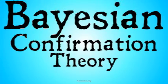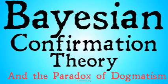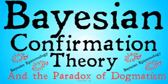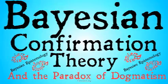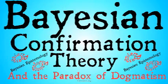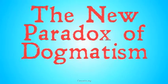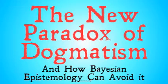Welcome back to Carniades.org. Today we're going to be continuing with our series on Bayesian Confirmation Theory and the Paradox of Dogmatism as part of our larger series on Bayesian Epistemology. This is going to be our last video in Bayesian Confirmation Theory, where we look at a very specific version of the Paradox of Dogmatism. Check out the previous video for a less rigorous and more intuitive version. If you're confused by anything, I'd encourage you to watch the rest of the series.